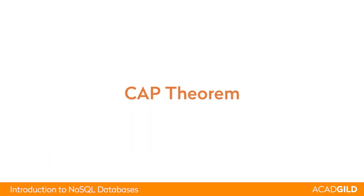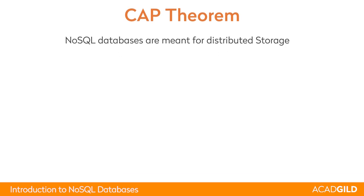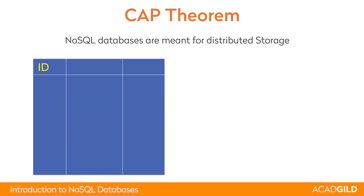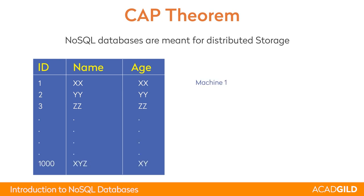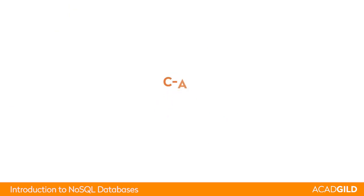Now we will talk about the CAP theorem, an important theorem in NoSQL databases. NoSQL databases are meant for distributed storage. For example, suppose you have a table with IDs and ages ranging from 1 to 1,000. It makes sense to distribute across four machines: IDs 1–250 on machine 1, 251–500 on machine 2, 501–750 on machine 3, and 751–1,000 on machine 4. This is how data distribution works.